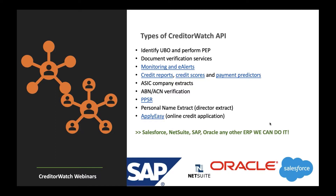The types of CreditWatch APIs we currently have include: identifying Ultimate Beneficial Owners and performing PEP and sanctions checks for AML/CTF compliance. Document verification services. PPSR APIs for registrations. Personal name extracts and director extracts from ASIC. ABN and ACN verification — so during onboarding you can verify a company still exists, how long they've been trading, and similar details.